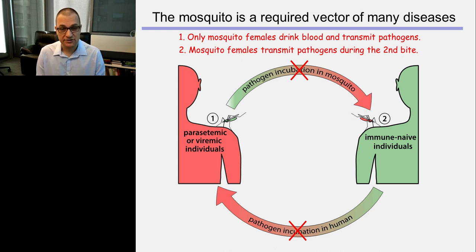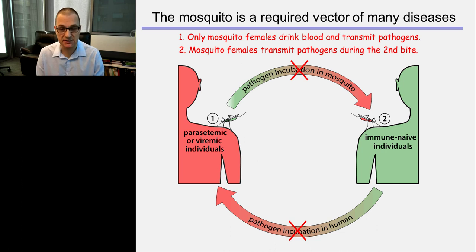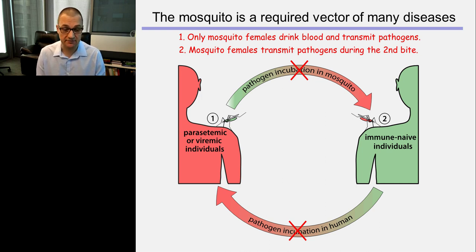Another interesting fact is that it takes a while for a pathogen to incubate in a mosquito, and the mosquito can only transmit disease during the second bite. In the first bite, the mosquito drinks blood and essentially infects itself. Then the parasite develops inside the mosquito, and it takes seven to ten days before the mosquito is ready for a second blood meal. At that second blood meal, the mosquito transmits the pathogens to humans.